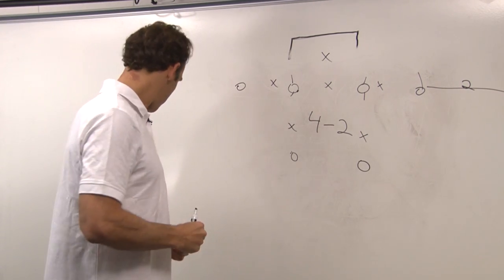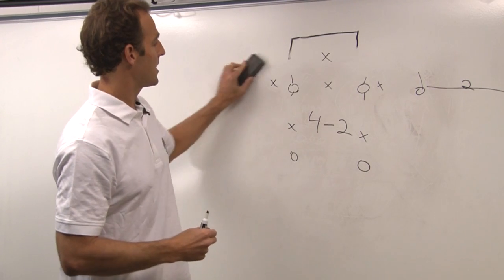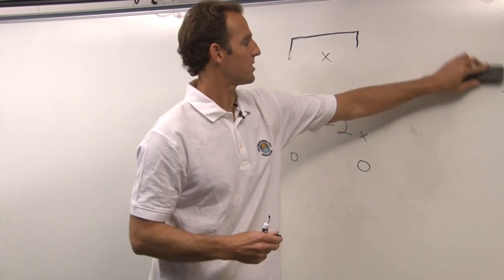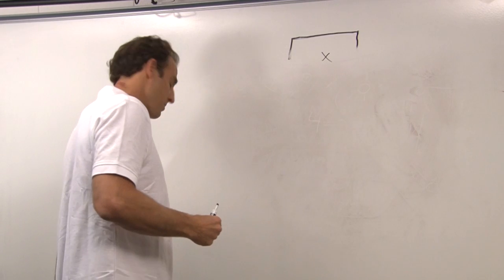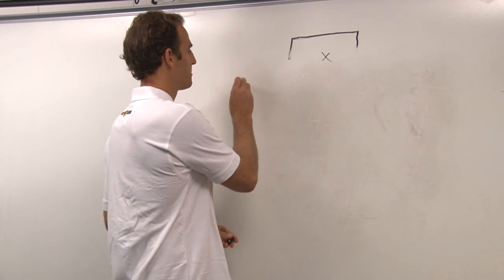The other system we have is a 3-3, and that's where you have three players on the 2-meter line, and you've got three players sort of in a triangle up top.